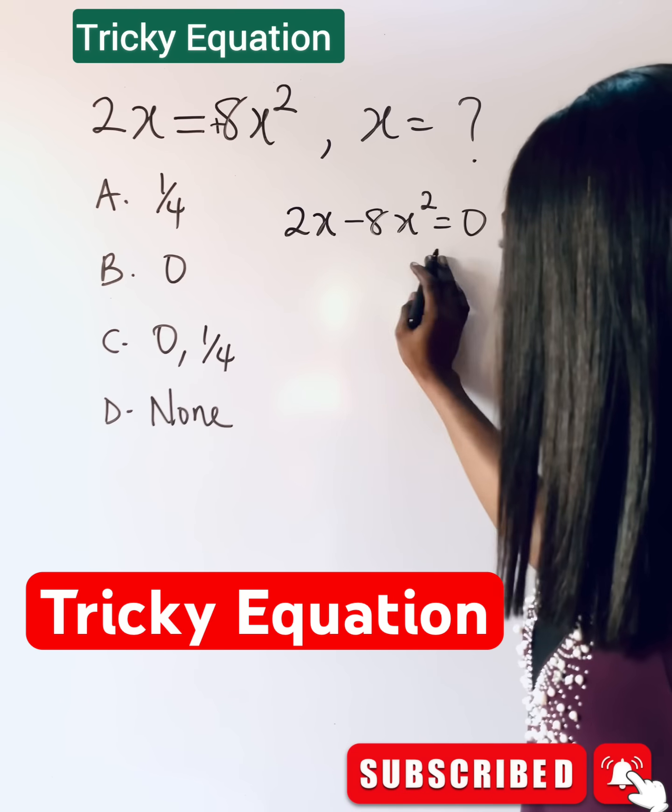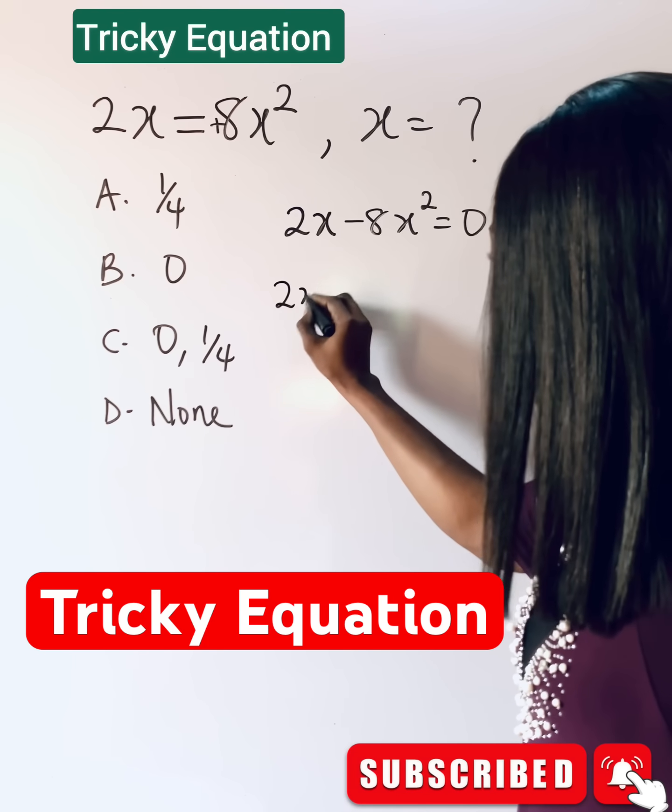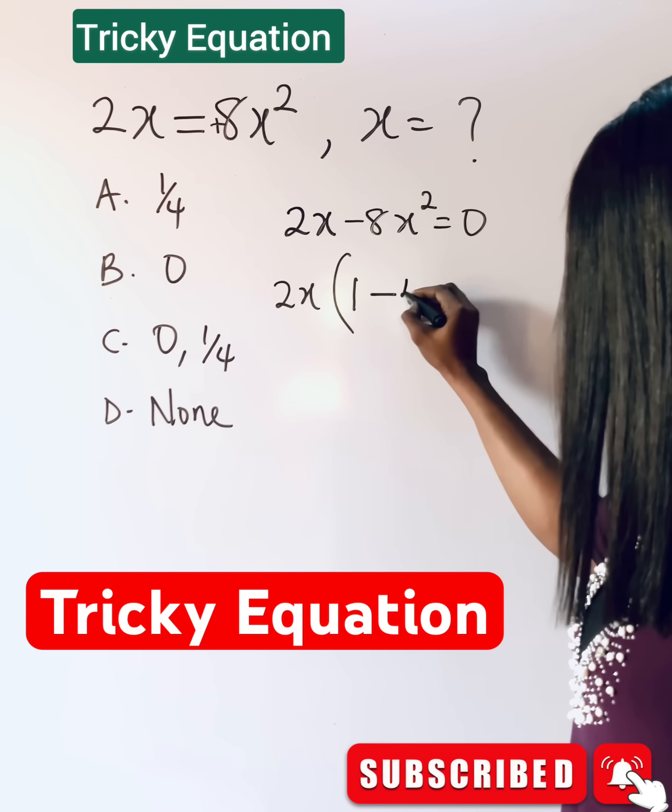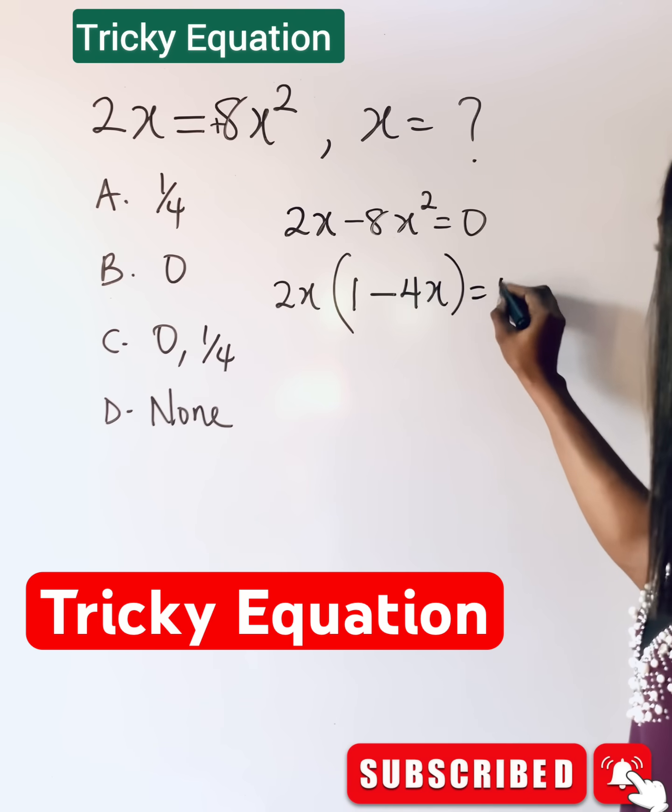So what do you do? Use the highest common factor, which is 2x. Use it to divide this is 1, use it to divide this. You have 1 minus 4x is equal to 0.